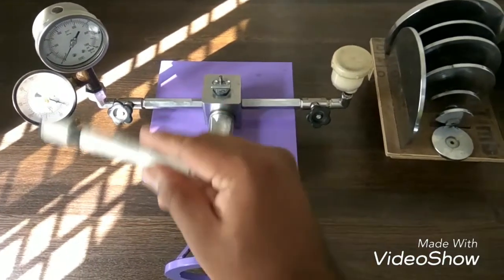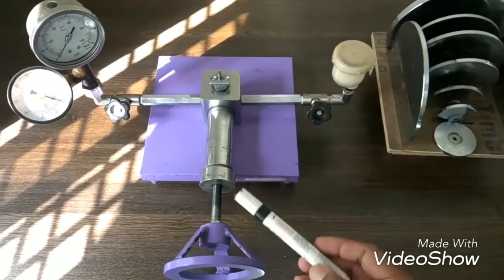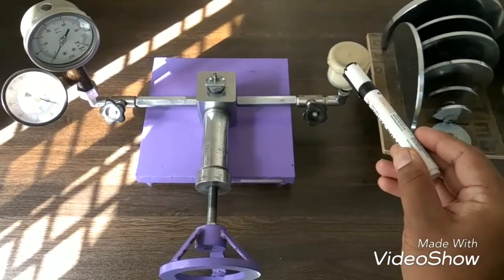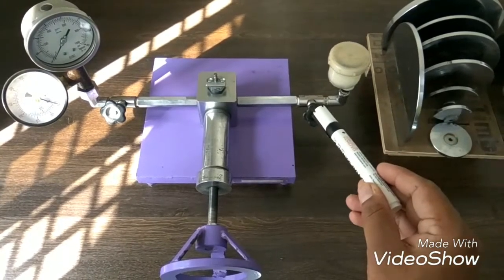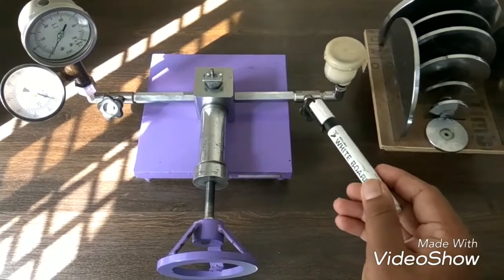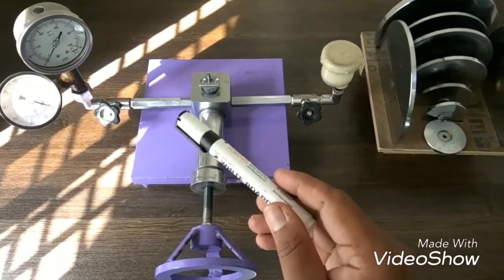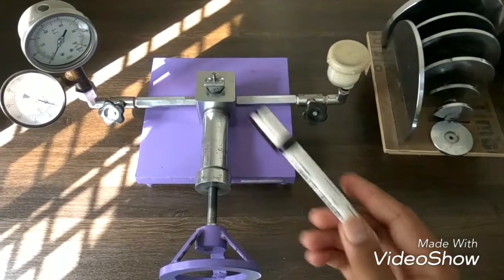This setup is called a dead weight pressure gauge. Here, this one is a reservoir, and these two are the knobs by means of which we can either supply or close the system on the left and right hand side.